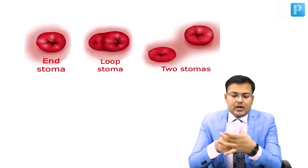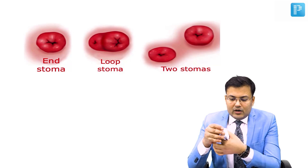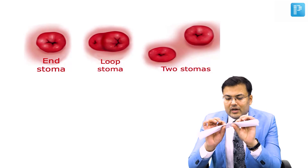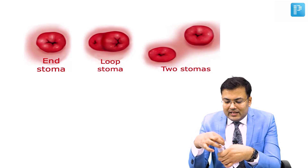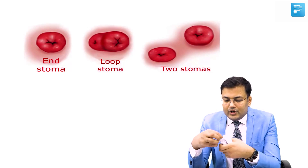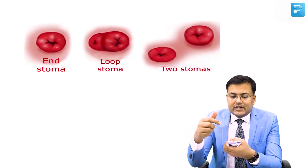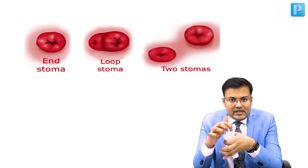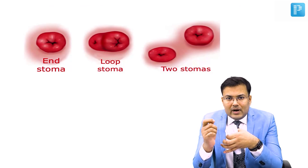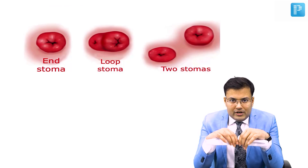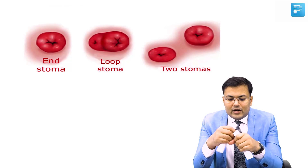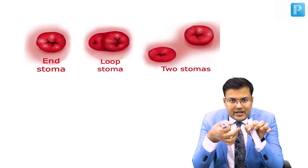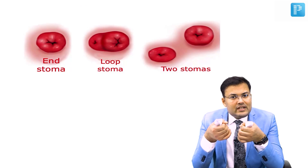In loop stoma, a loop of bowel is taken out and cut — not completely, but partially — and both ends are taken out, giving two external openings which are joined together. In double barrel stoma, the bowel is divided and both ends are taken out via two separate openings with a skin bridge in between. This is double barrel.